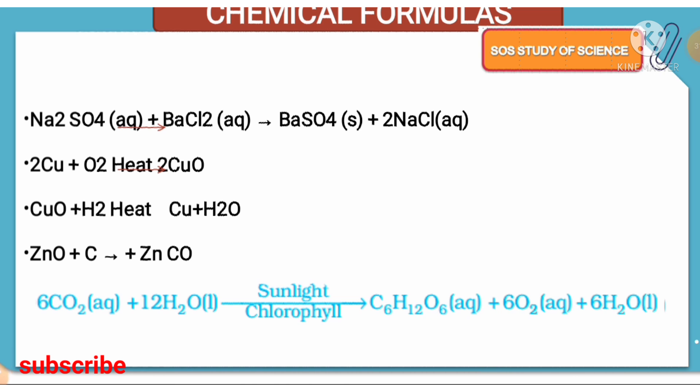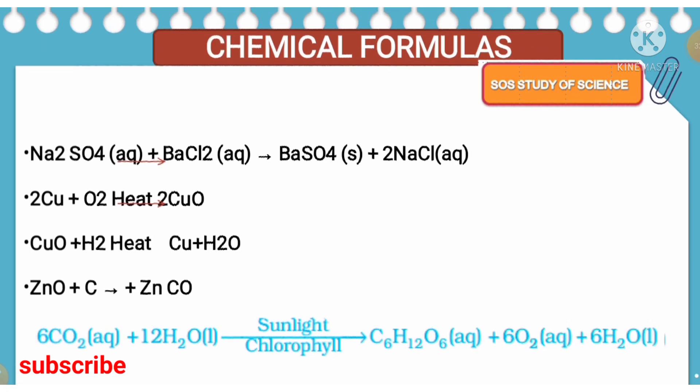The final equation represents photosynthesis, where carbon dioxide and water in the presence of sunlight and chlorophyll form glucose and release oxygen in the plants. Water is also a product formed during photosynthesis.